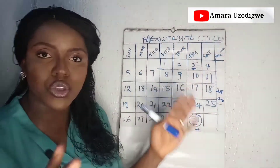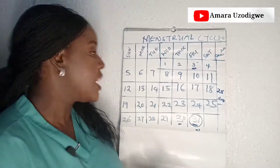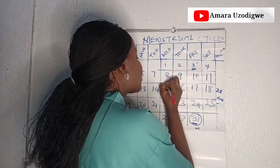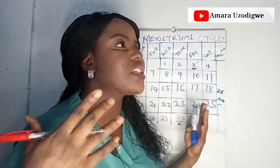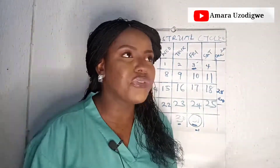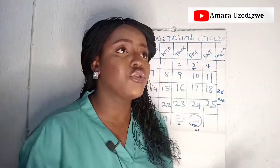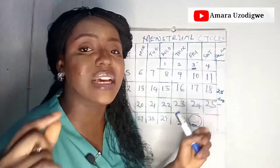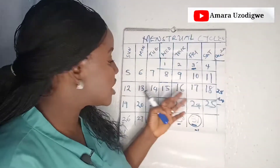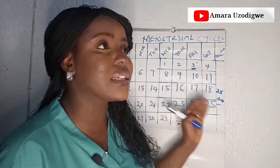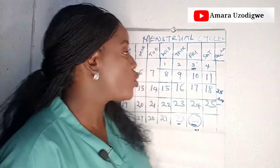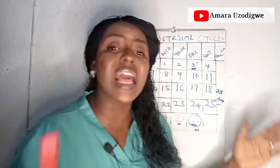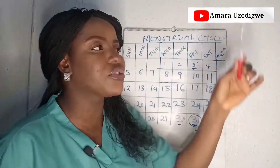For some people their period flows for one to three or four days; for others it flows for five or six days. When it stops, write 'period stops' with your red pen. From around the ninth day, start watching yourself — note any discharge, any mood changes. If you feel moody, angry, stressed, or have any significant event that month, write it under that calendar day.